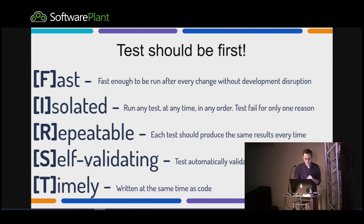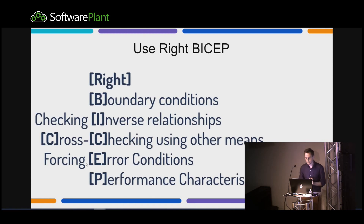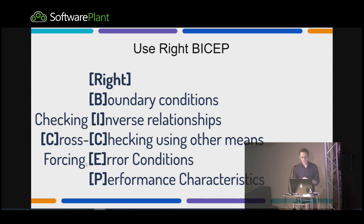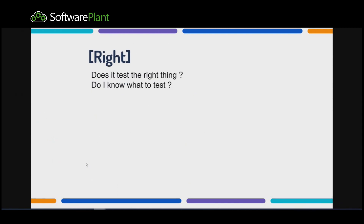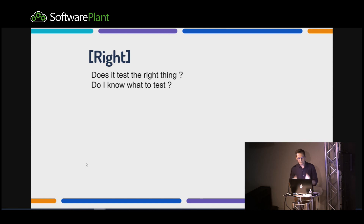That's the easy part. There's a second part about what to test, and there's a really funny acronym — it's called Right BICEP. R: I should know what I want to test and my tests should be right. They should test the right thing — I shouldn't test something that will never happen and miss the most common cases.